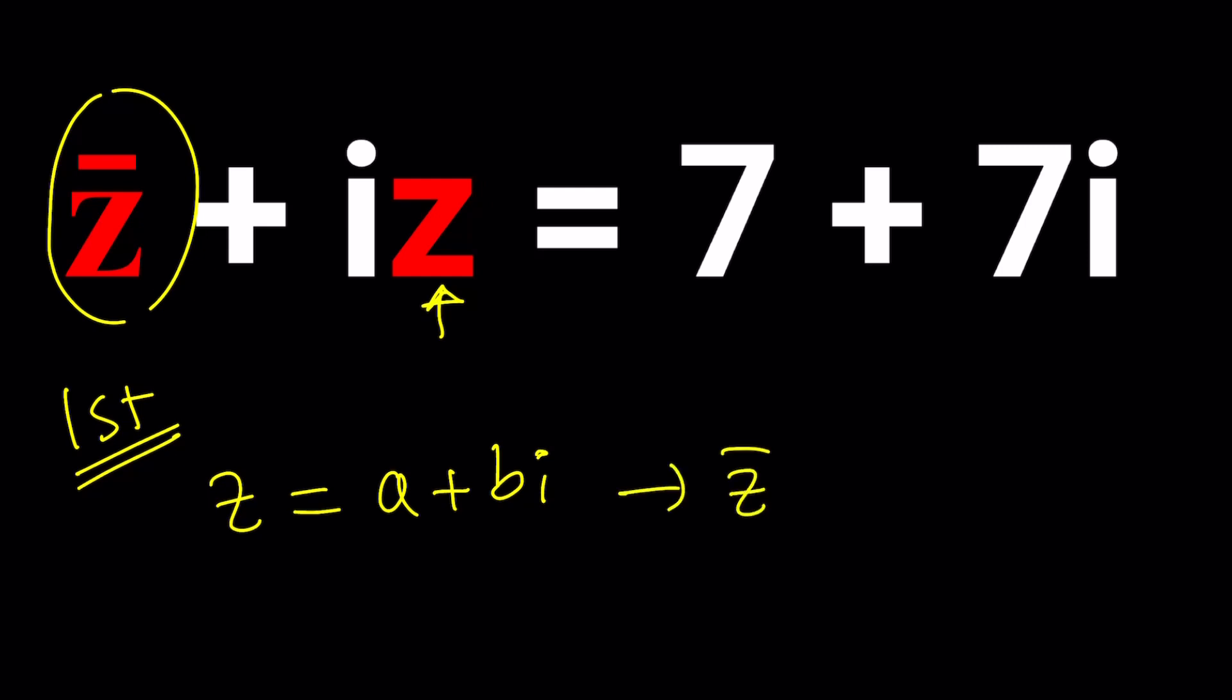From here, Z bar is going to be the complex conjugate. The special number when you multiply by Z gives you a real number. When you add to Z, it gives you a real number again. In that sense, it's unique. Let's go ahead and plug everything in and then solve for A and B. That's basically going to be our first method.